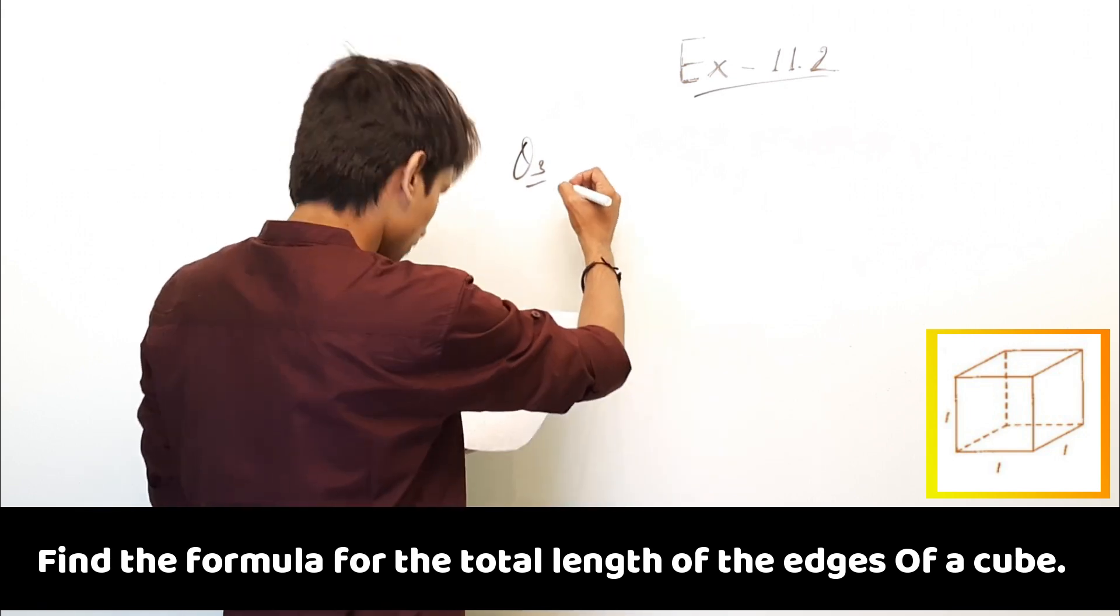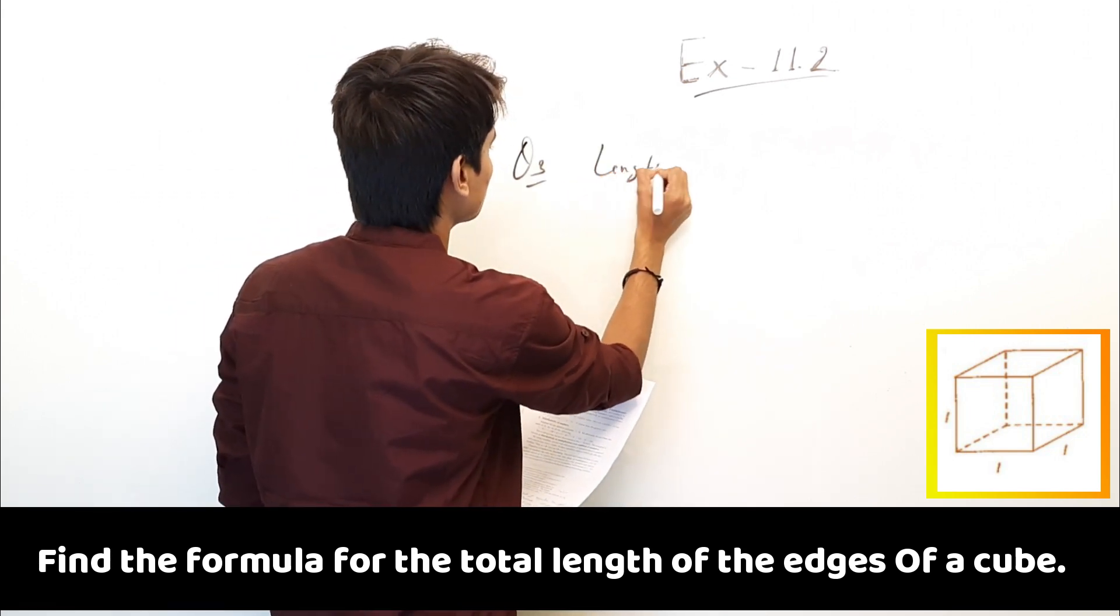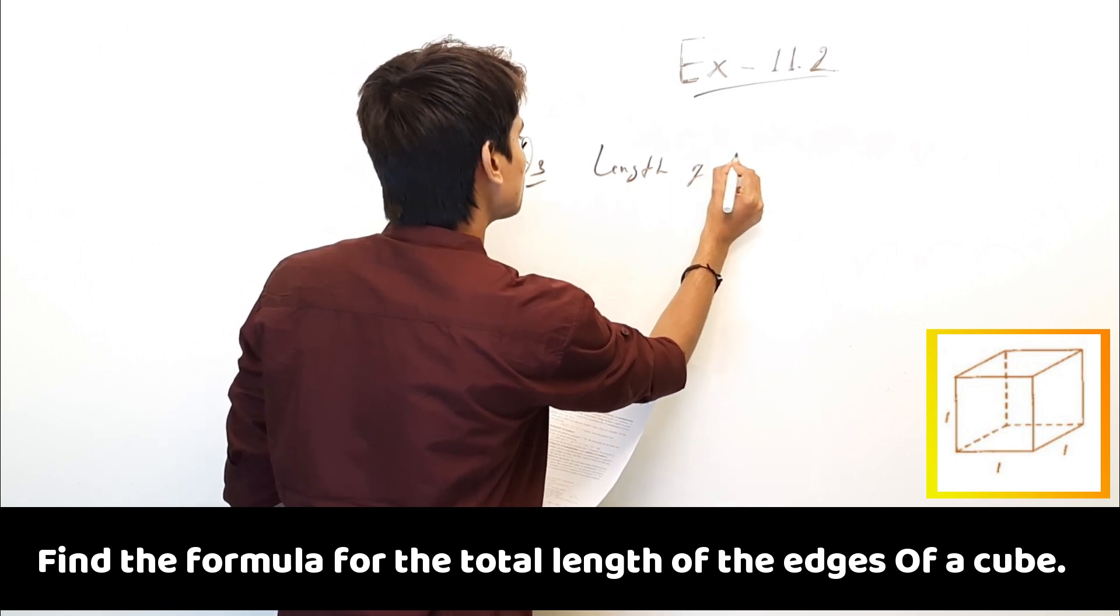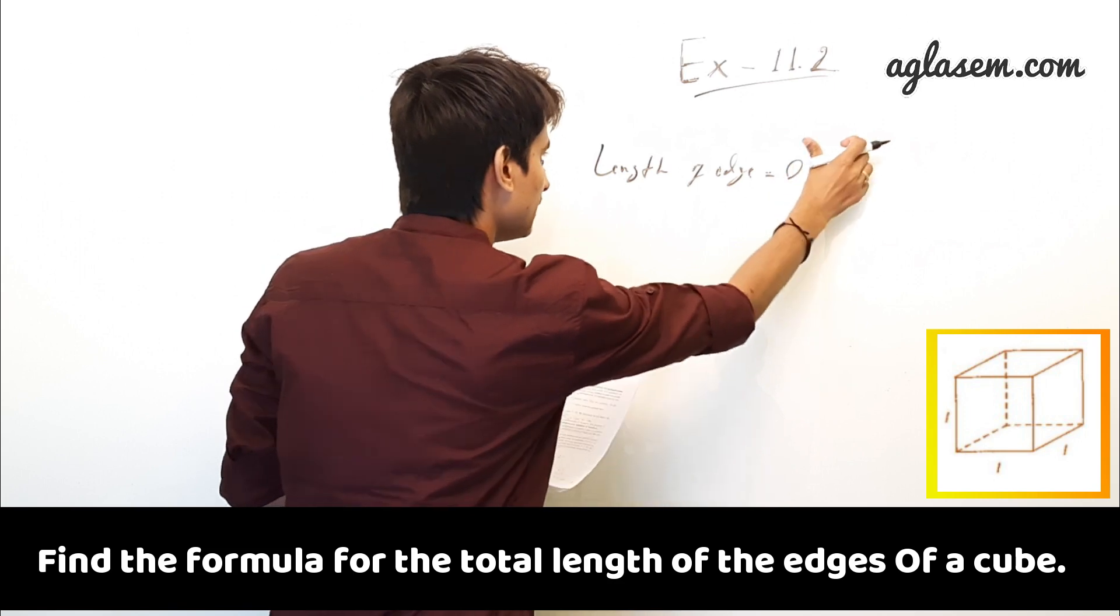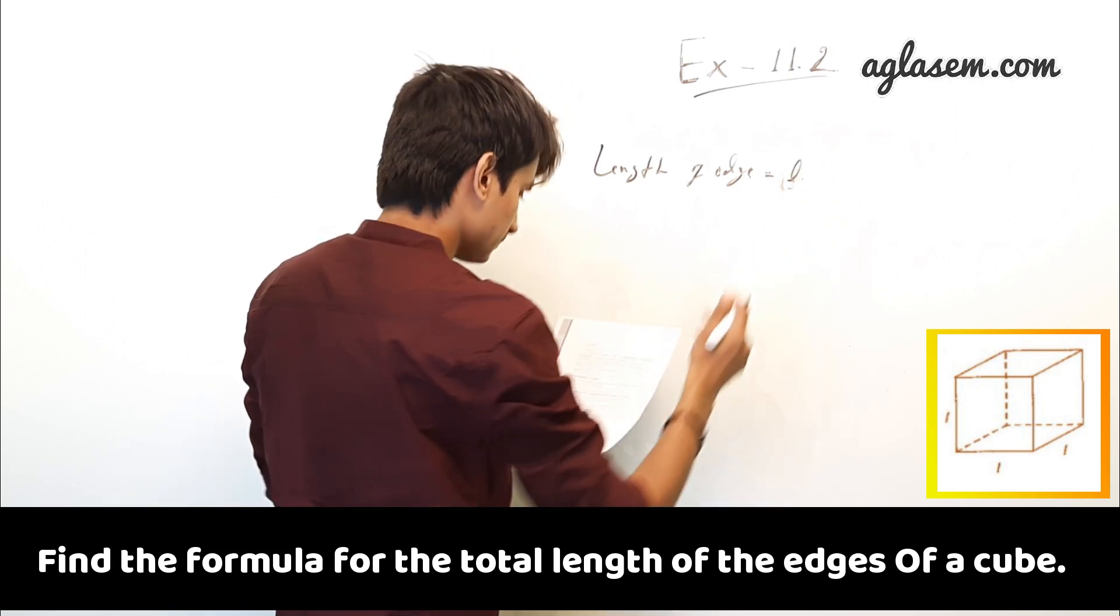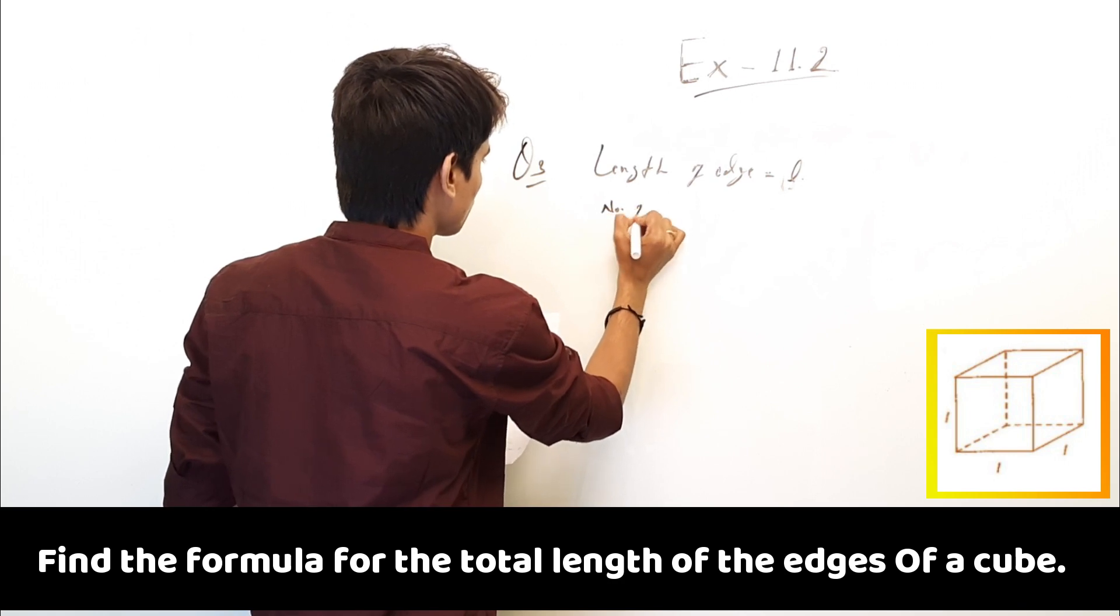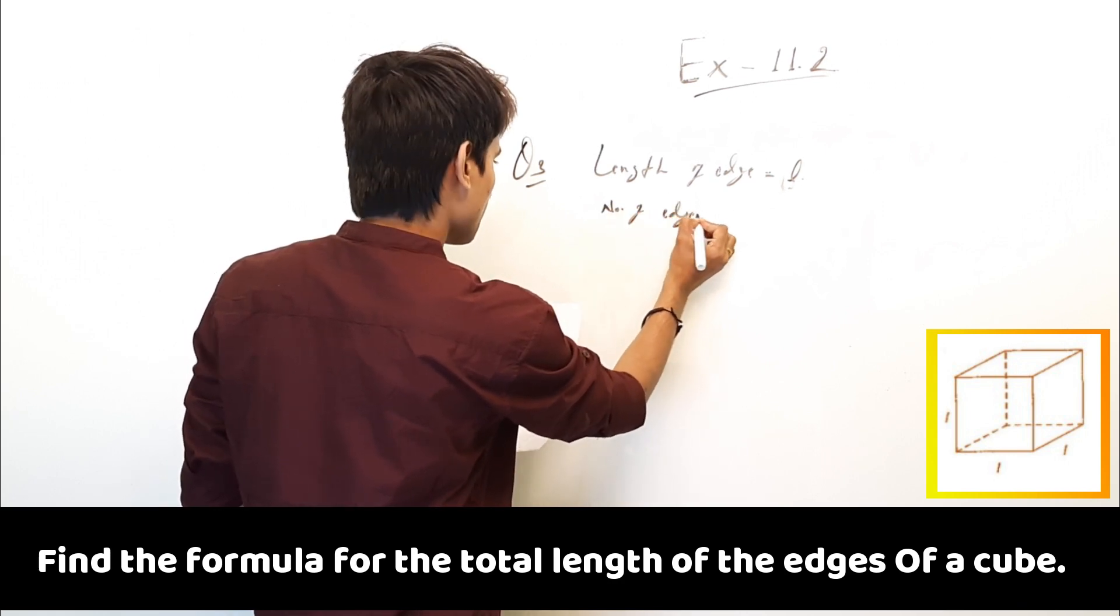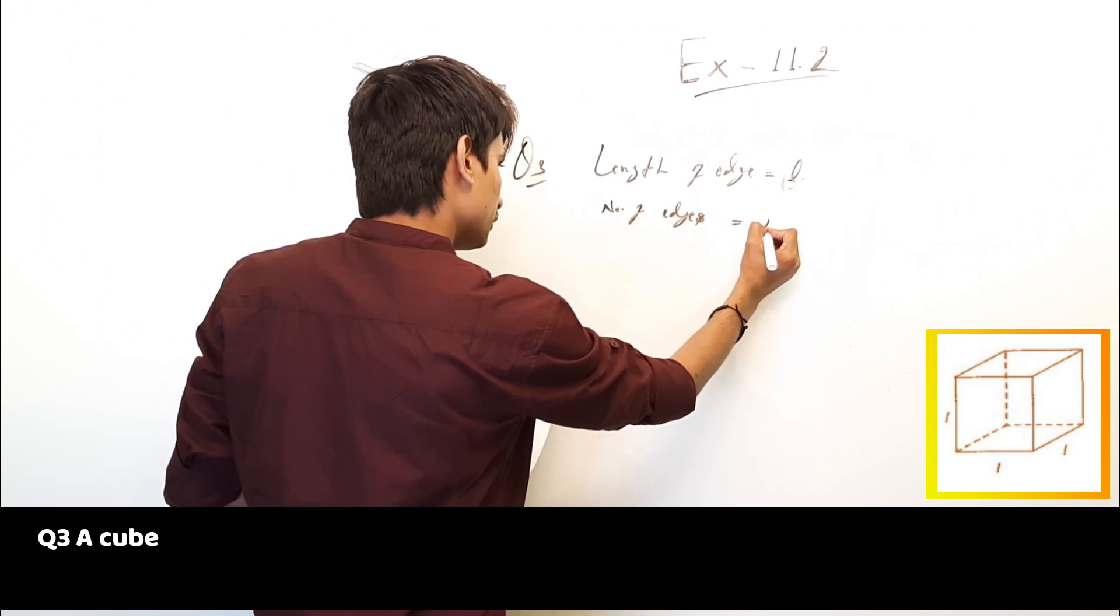So let's start with the solution. Length of edge E is equal to L, given in the question. Number of edges is equal to 12.